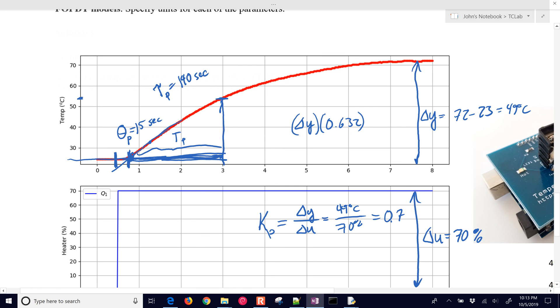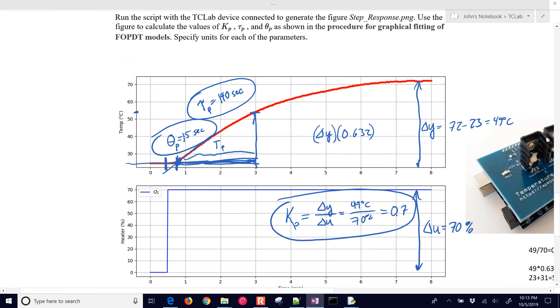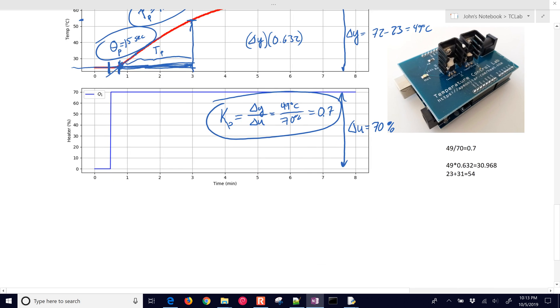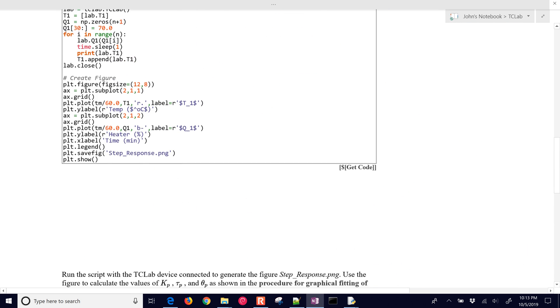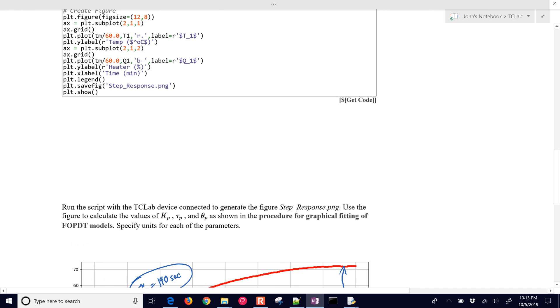So there I have it, my KP, my Tau P, and my Theta P. So those are my parameters that I came up with based on the graphical fit method. And that was it for this one.